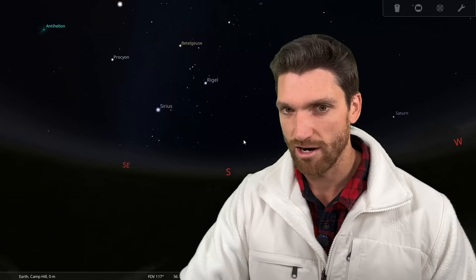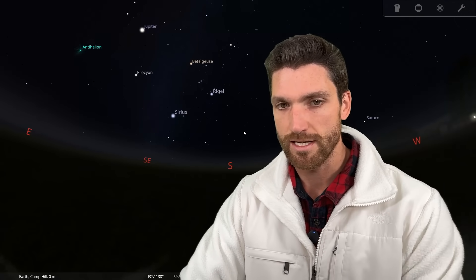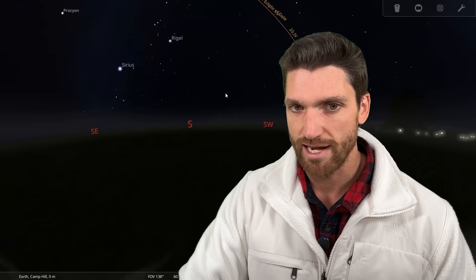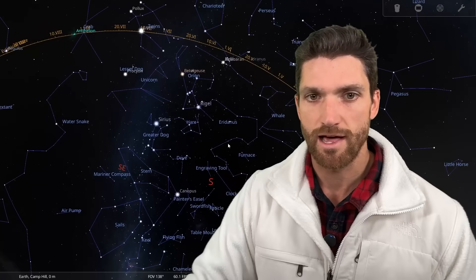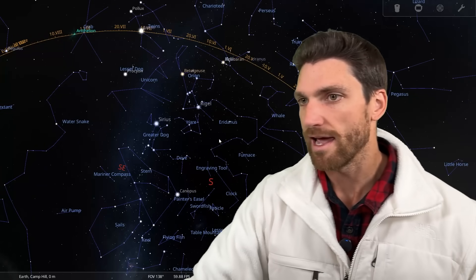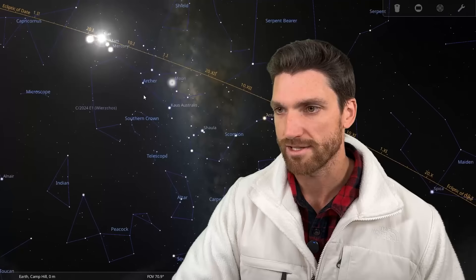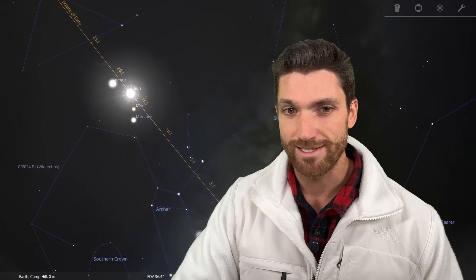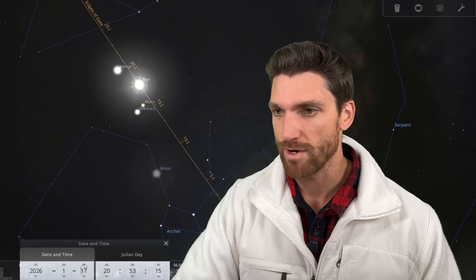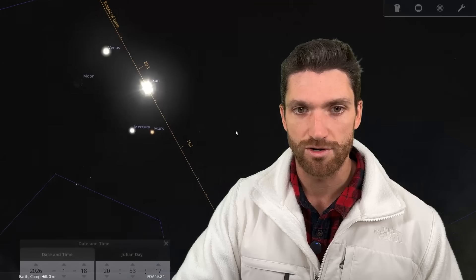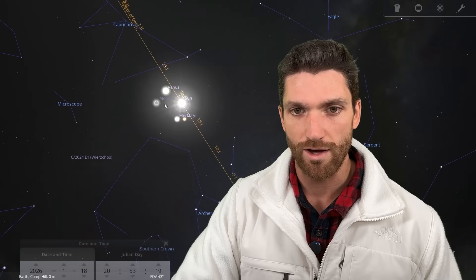So here we have Stellarium, our open source software, to help us see the night sky, position of the planets, and more. And I'm going to turn off the ground and atmosphere. I'm going to turn on the constellations. This line there shows the ecliptic. And we are going to go right to our planets to start. And you'll notice that we have all these planets grouped up together. We have the sun, we have Mercury, Mars, Venus. And if you go forward just two days, you'll see that we have our moon joined in. So here's our new moon as well.